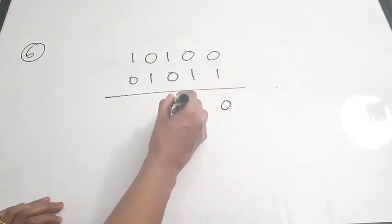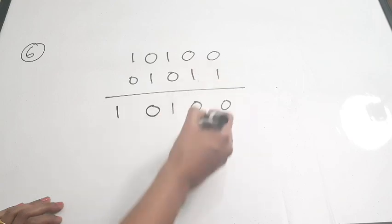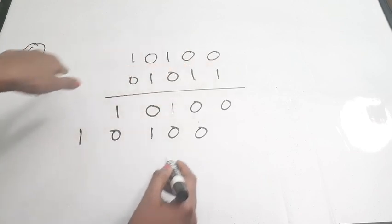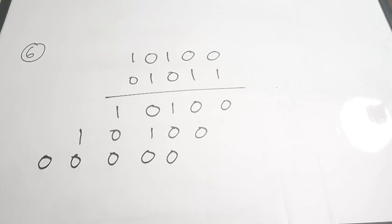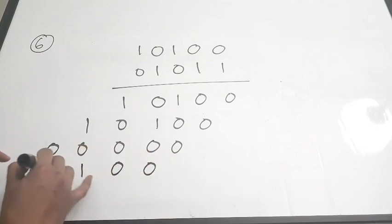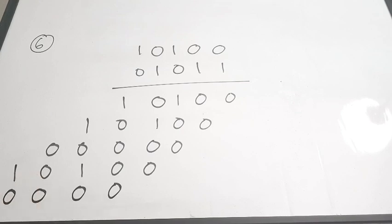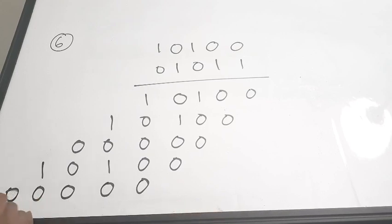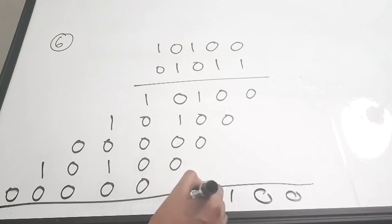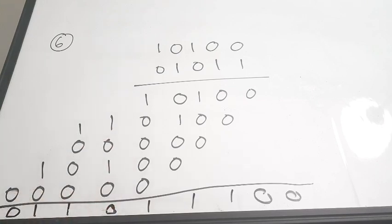Performing the multiplication step by step: multiply 10100 by each bit of 01011, shifting left for each bit position. The partial products are 0010100, 0010100, 00000000, 0010100, and 00000000. Adding all partial products gives the result 011000 with carries resolved.